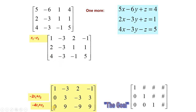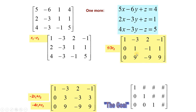We now have 0s in place. We need to bring 1 here using 1 over 3 times R2 — multiplying this row by 1 over 3 gives 1 here as the leading entry. Now to make this 9 equal to 0, we use R3 minus 9 times R2, which makes this 9 become 0.